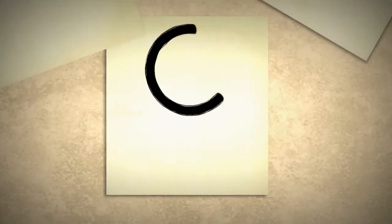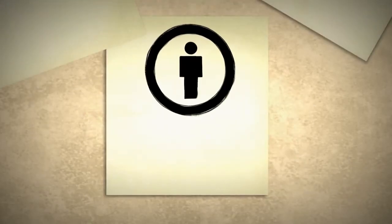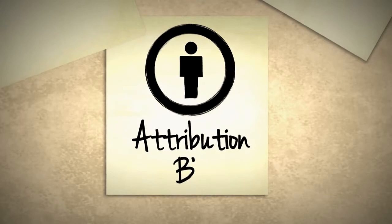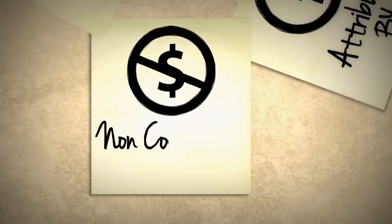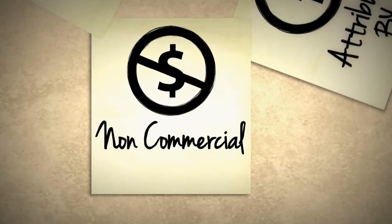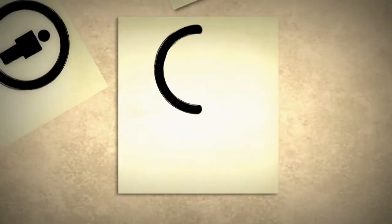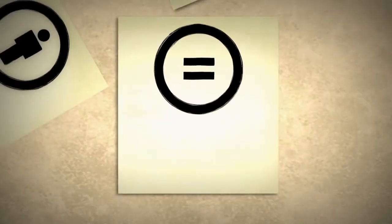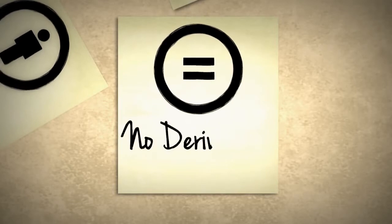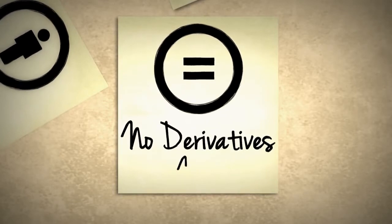What are the licenses? This sign attributes the work to its owner — how do you want to be known? This sign prevents the user from using the creative work for commercial purposes. This sign indicates that the user can use the work but cannot apply any changes to it.